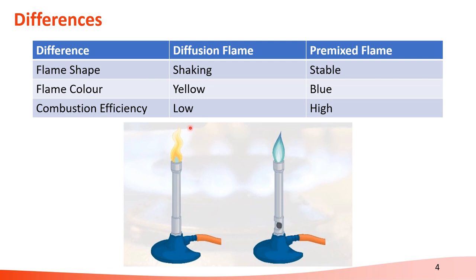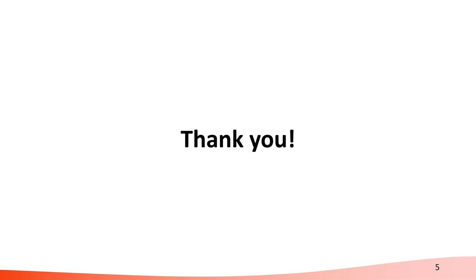By comparison, the diffusion flame has less combustion efficiency, so it will take more time to boil water. We therefore prefer the pre-mixed flame to burn something, just like when you cook food. This is the end of my presentation — thank you.